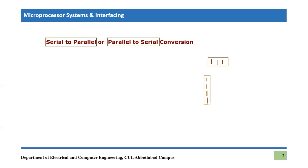You can easily convert parallel data into serial data or serial data into parallel data using rotate instructions. Let's consider an example where a parallel data is coming into the microcontroller — let's say a PIC18F microcontroller. Port B is receiving some parallel information and we want to transmit it serially. Port B is receiving eight-bit parallel information.